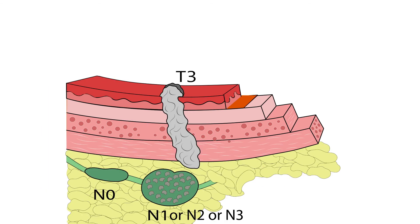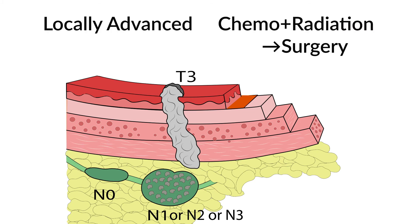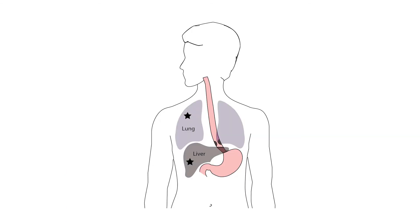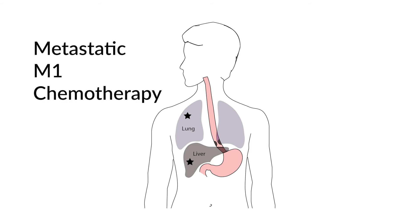This shows a locally advanced tumor, which is either T3 or has positive nodes — meaning N1, N2, or N3. These tumors are best treated by a combination of chemotherapy and radiation first, followed by surgery. Esophageal cancer is considered metastatic if there are signs of spread to other organs such as the lung, liver, or bone. These cancers are considered M1 and are best treated with chemotherapy. Radiation therapy is occasionally used to control symptoms such as obstruction in the esophagus or if spread to a bone causes pain.